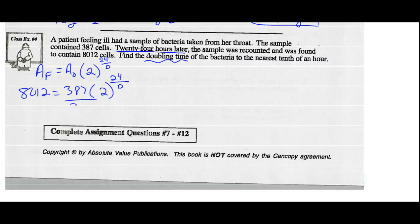Let's solve for d. Step one, divide both sides by 387. Now I can take the common log of both sides. The common log of 8,012 divided by 387 would equal the common log of 2 to the exponent 24 over d. We know we take that exponent out front once I take the common log. So I could write 24 over d times the common log of 2. Now we divide both sides by the common log of 2.